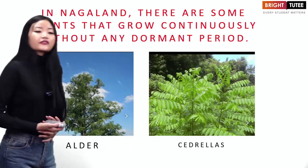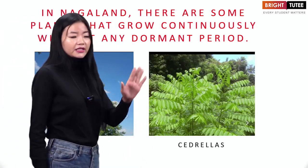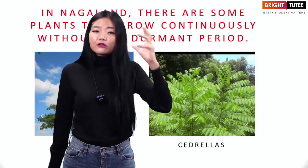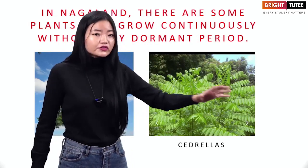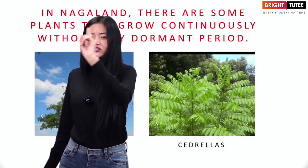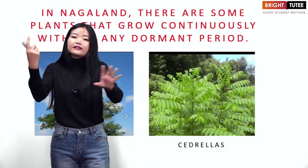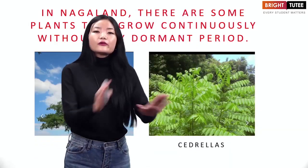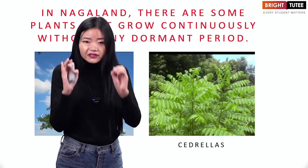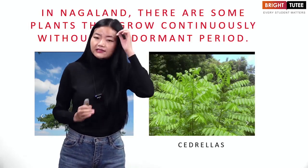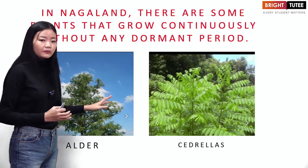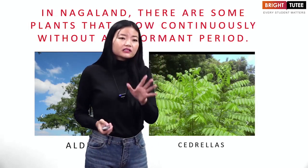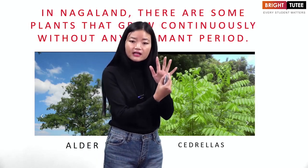Most plants across the world experience a growing season, a dormant season, a flowering season, and a fruiting season. But the most interesting fact about Nagaland is that some plants grow continuously without any dormant period — these are the alder tree and the citrus tree. These two plants will grow continuously until they reach maturity.